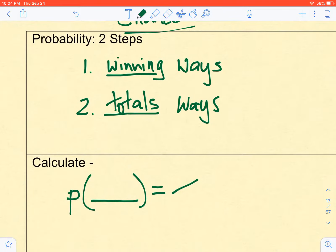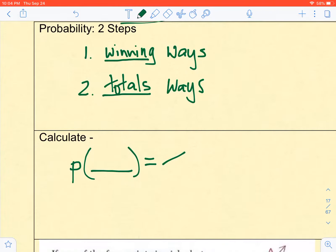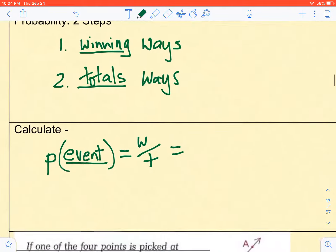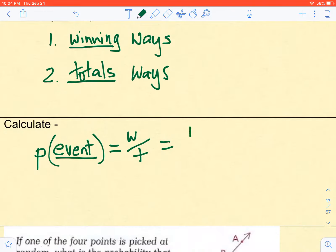Once you have those two, then to calculate the probability of an event, we would take the wins over the totals. For an example, let's say you've got a probability of two-sixths. We know that reduces down to one-third. So make sure that you reduce your ratios.